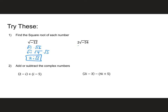For the second one: I have 2 times the square root of negative 1 times the square root of 54. And 54 is 9 times 6, so that's the square root of 9 times the square root of 6. That gives me 2 times i times 3 and the square root of 6. So 2 times 3 is 6. Final answer: 6i√6.